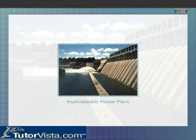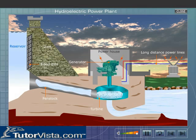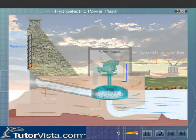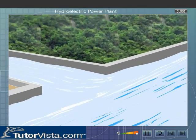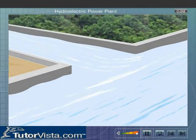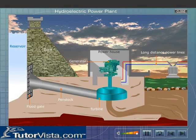In a hydroelectric power plant, electricity is produced from water. A dam is built across a large river to hold back the river water and raise its level to form a reservoir. At the bottom of the dam there is a floodgate.